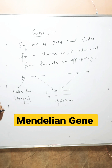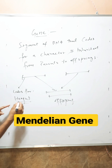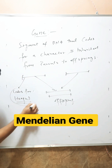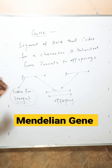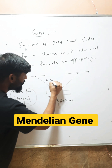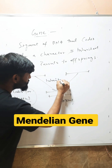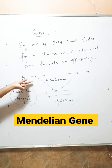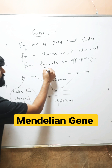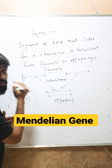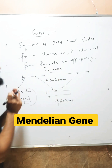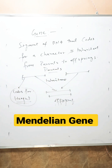So a gene is a segment of DNA that codes for a character. Here, this segment is coding for height, and it is inherited — transmitted from parents to offspring.